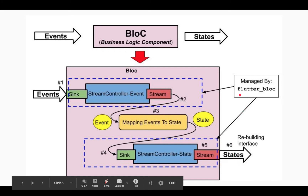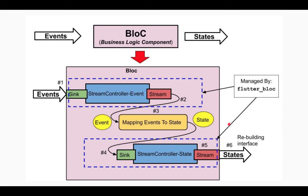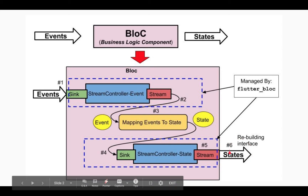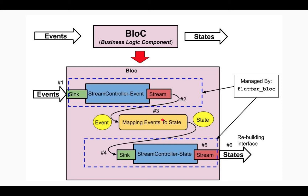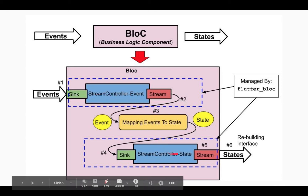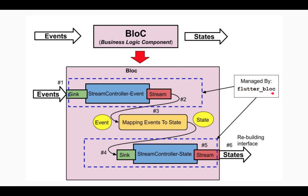However, by using the flutter_bloc library we can reduce that to half. We still have to send the events ourselves, still have to rebuild the interface based on the state we get, and still have to provide the business logic — what to do with events and how to convert them into state. However, we don't have to manage the stream controller part for events or states; that will be handled by flutter_bloc. Our steps are reduced to half, and now we'll see how to use this library in the code.